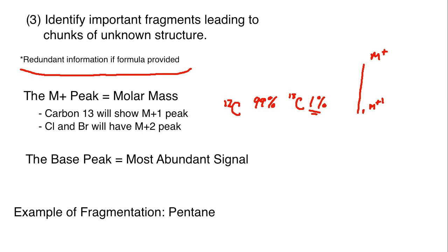For the halides it's M+2, and that comes from the chlorine and bromine. You have chlorine-35 and you also have chlorine-37, and the ratio of these are 75% to 25% for the 37.